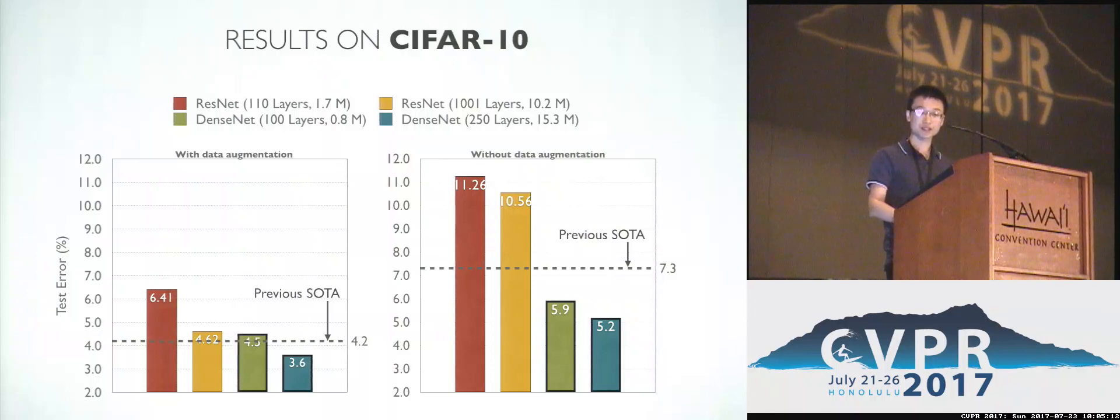If we train the same models on the same dataset but without using data augmentation, we can see that ResNet overfits to the training data severely. Both models get higher than 10% test error. However, DenseNet is still able to get 5.9 and 5.2% test error without using any data augmentation.